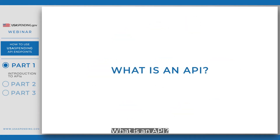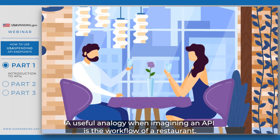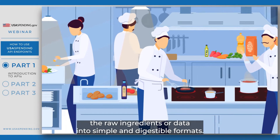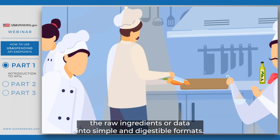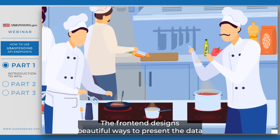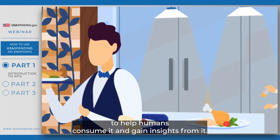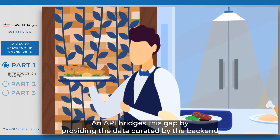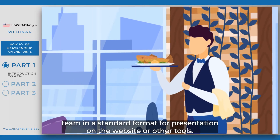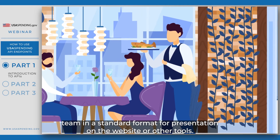What is an API? A useful analogy when imagining an API is the workflow of a restaurant. The back end is the kitchen where they transform the raw ingredients or data into simple and digestible formats. The front end designs beautiful ways to present the data to help humans consume it and gain insights from it. An API bridges this gap by providing the data curated by the backend team in a standard format for presentation on the website or other tools.